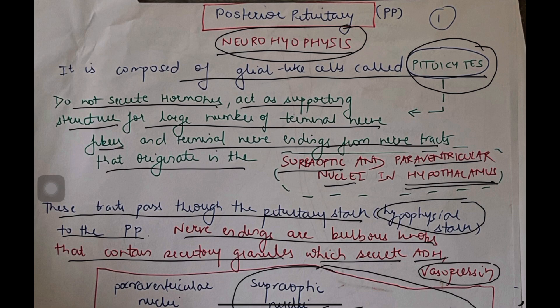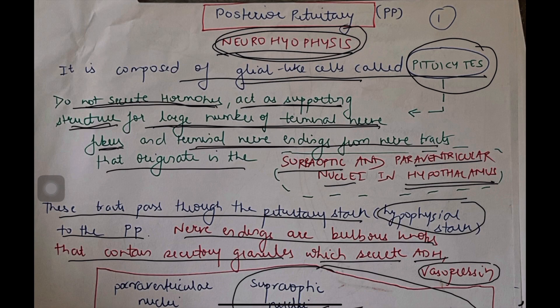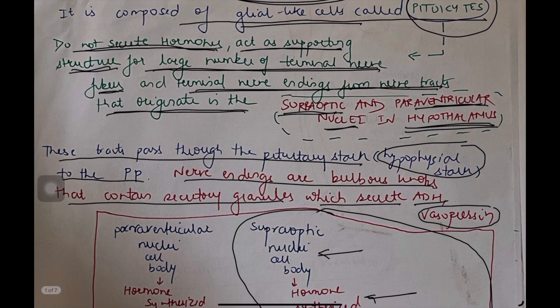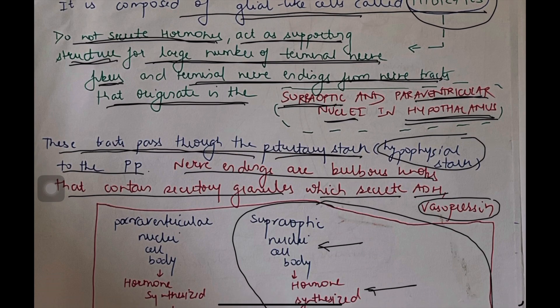ADH is also called arginine vasopressin or anti-diuretic hormone. It is secreted by a part of the brain called the neurohypophysis. It is composed of glial-like cells called pituicytes. These cells do not secrete the hormone. They act as supporting structures for large numbers of terminal nerve fibers and terminal nerve endings from nerve tracts that originate in two places, supraoptic nuclei and paraventricular nuclei in hypothalamus. These tracts pass through pituitary stalk, also called the hypophyseal stalk, to the posterior pituitary. The nerve endings are bulbous knobs that contain secretory granules which secrete the hormone ADH.